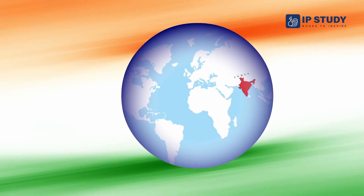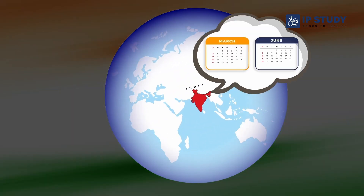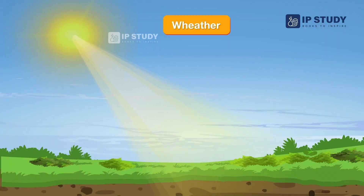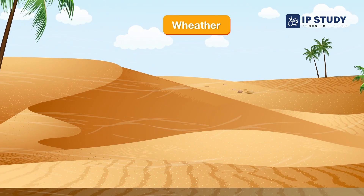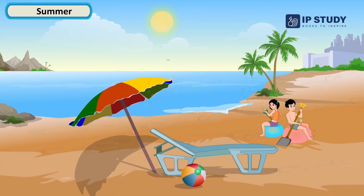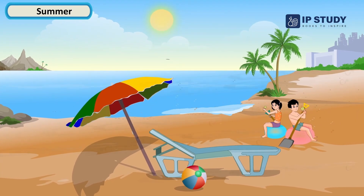The summer season usually runs between March and June in India, where the days are considered to be the longest and nights shorter. The weather is hot, humid, and dry during this season. People spend most of their days outside during summer.